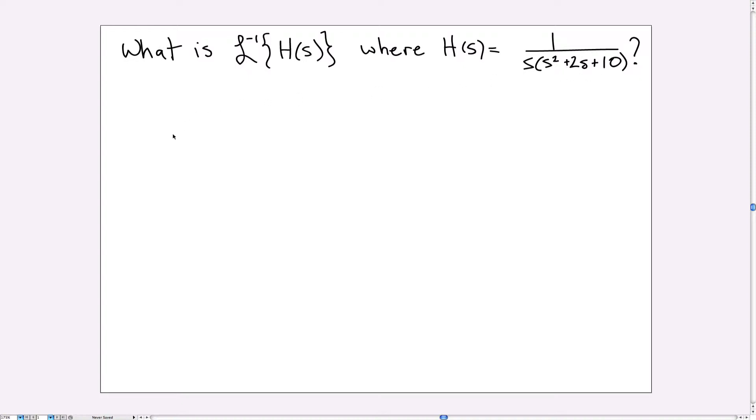The first step in solving this is to rewrite H(s) as a sum of two fractions. You can see here that one of the factors in the denominator is certainly S. And then, well, this might factor.